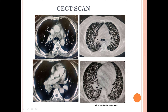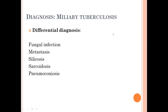With all these findings, the diagnosis of miliary tuberculosis was kept, which was confirmed later by biochemical investigations. The differential diagnosis in this case includes fungal infection, metastasis, silicosis, sarcoidosis, and pneumoconiosis. Miliary tuberculosis is a hematogenous spread of infection, which is commonly seen in immunocompromised patients, with nodules in random distribution.